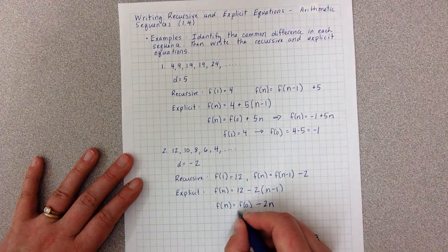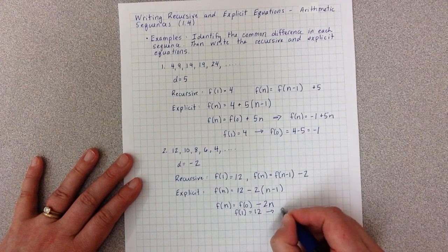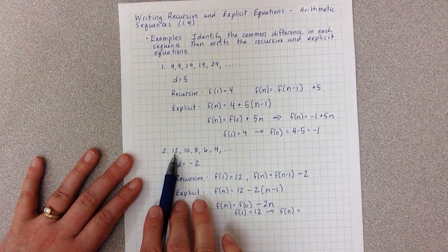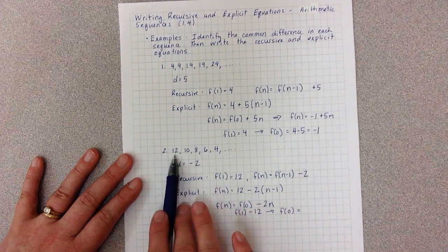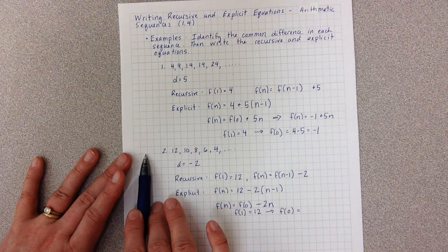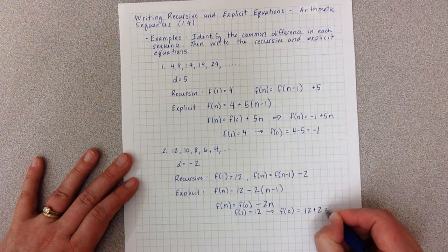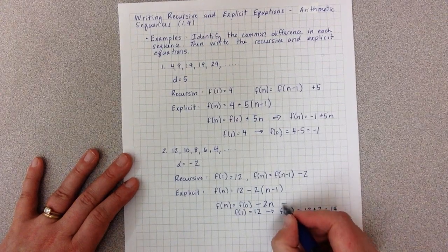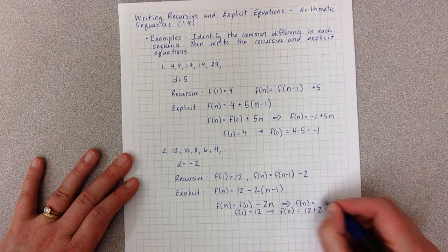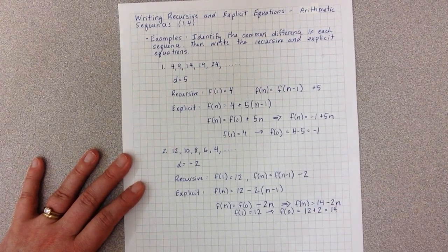I know that F(1) is 12. So to go backwards, I'm going to have to do the opposite of what I do when I go forwards. When I go forwards, I subtract two. So if I go backwards, I add two. So I now can write the explicit by saying F(N) = 14 - 2N.